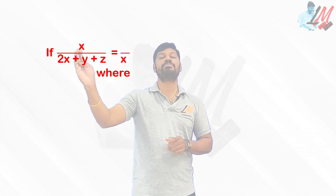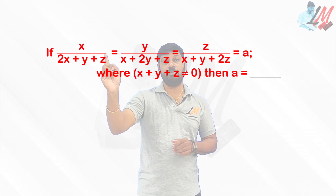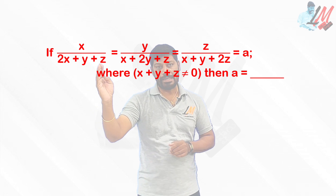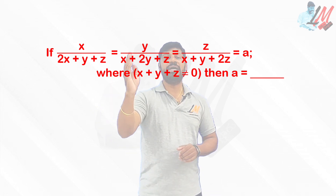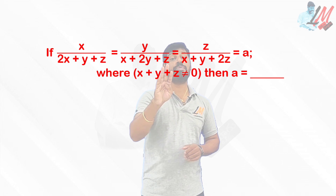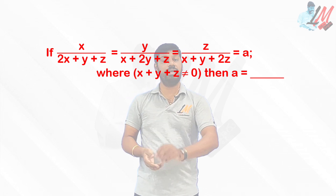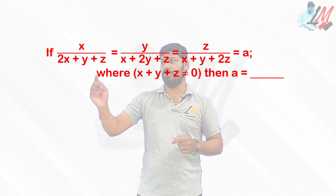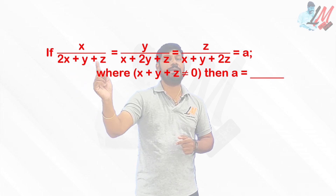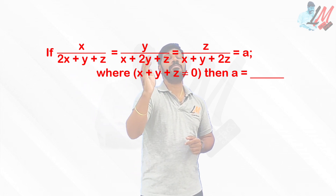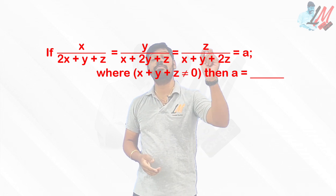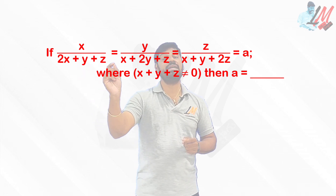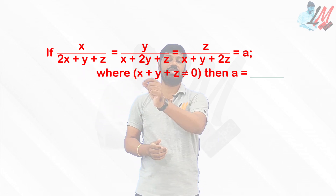If x divided by (2x + y + z) — observe carefully, x is in the numerator and 2x is in the denominator — is equal to y divided by (x + 2y + z), where y appears as 2y in the denominator, is equal to z divided by (x + y + 2z), which equals a. So: x/(2x+y+z) = y/(x+2y+z) = z/(x+y+2z) = a, where x + y + z is not equal to zero. What is the value of a?